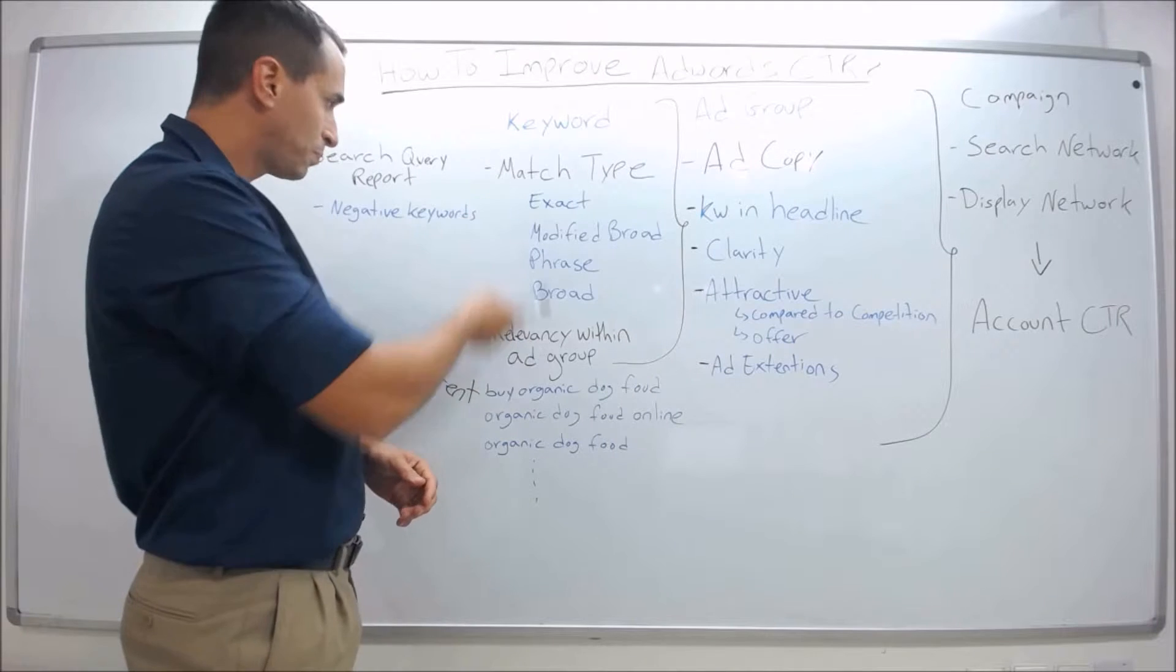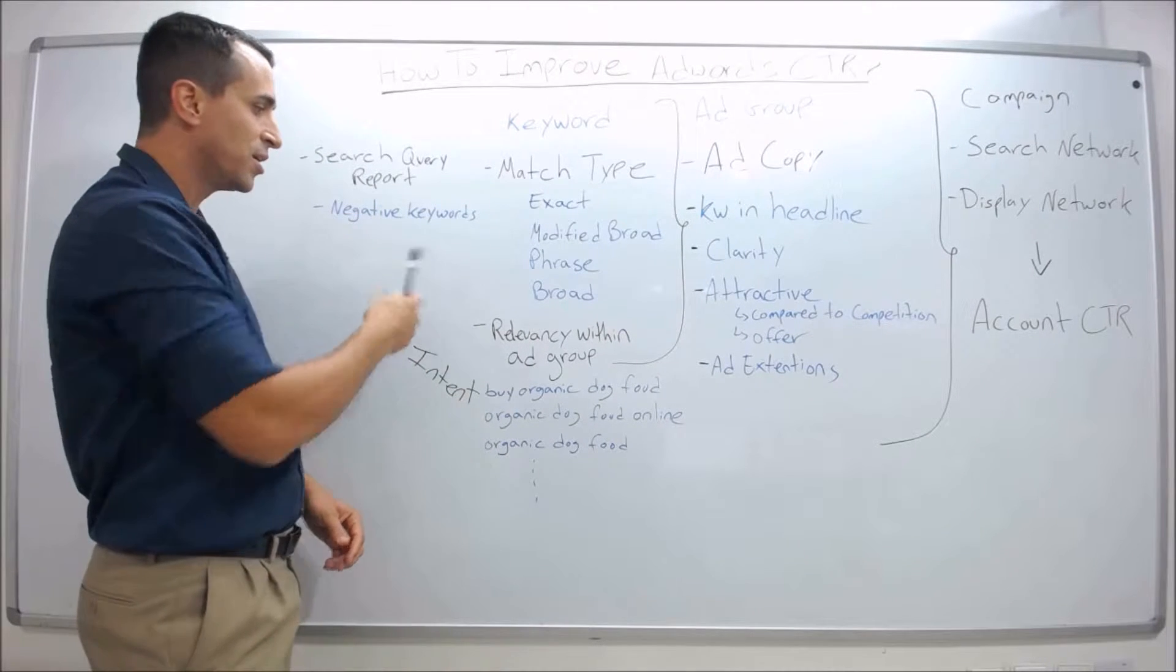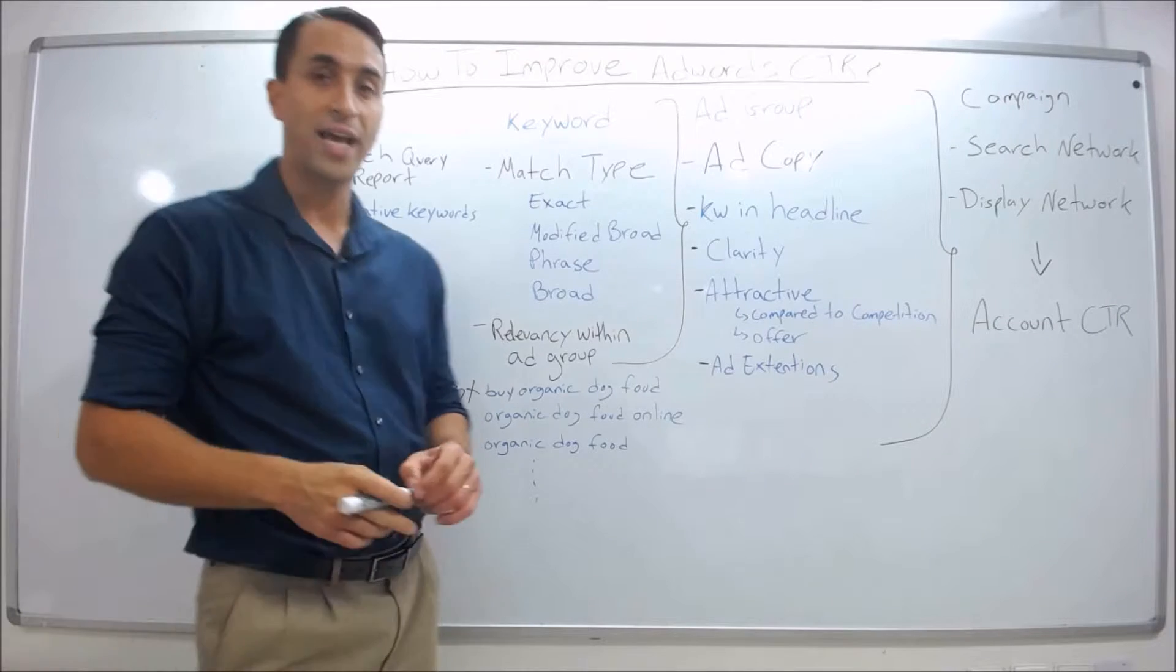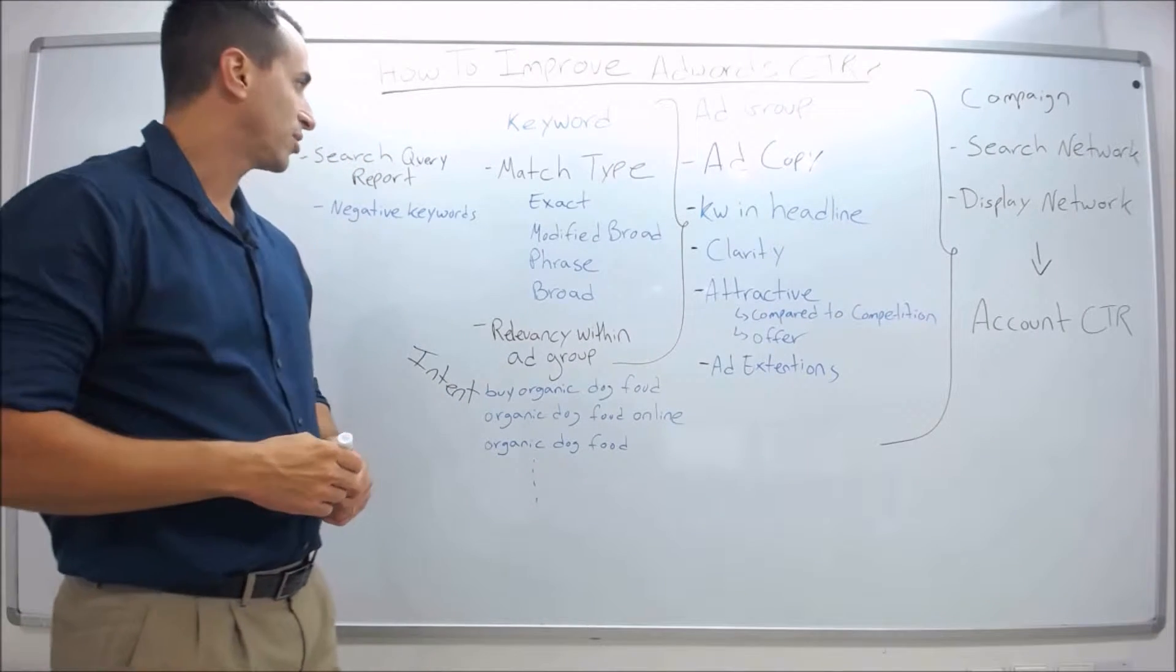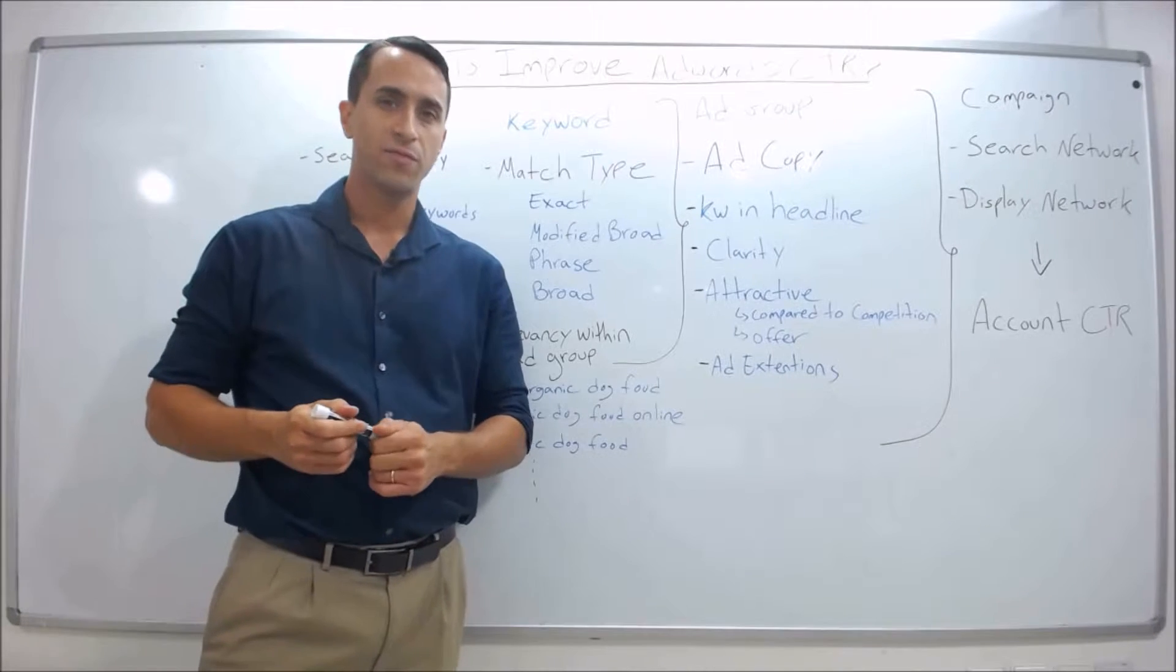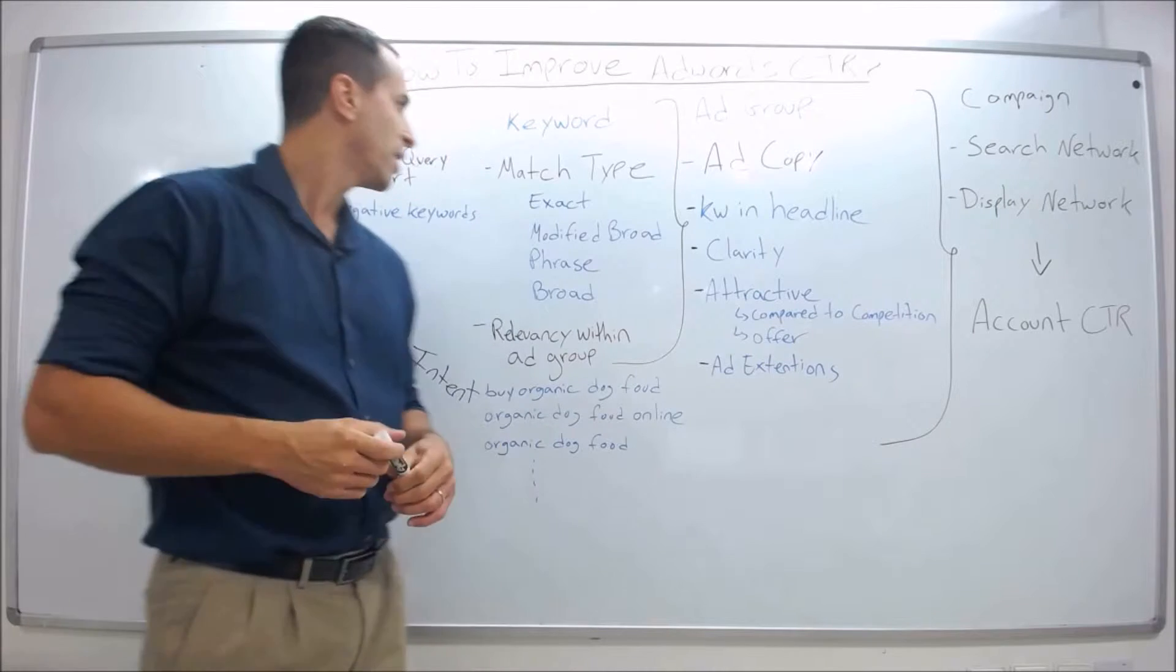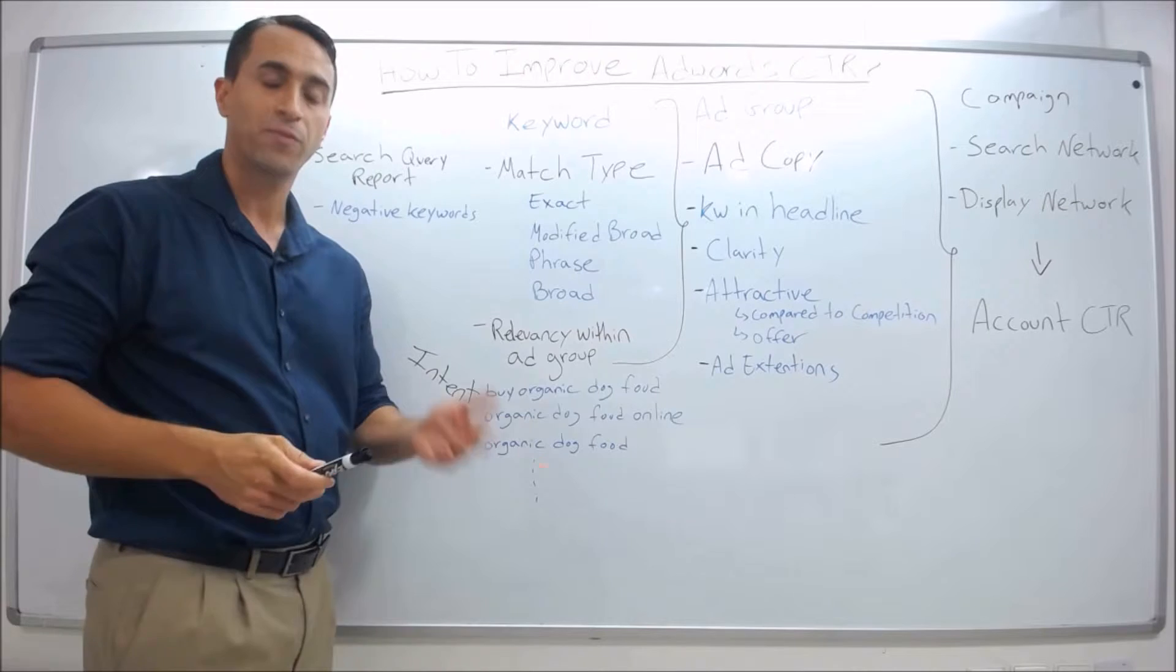In this case, what you want to do is run the search query report and add negative keywords. So if your keyword is organic dog food in broad match and you sell organic dog food, you might get matched to recipes for organic dog food.